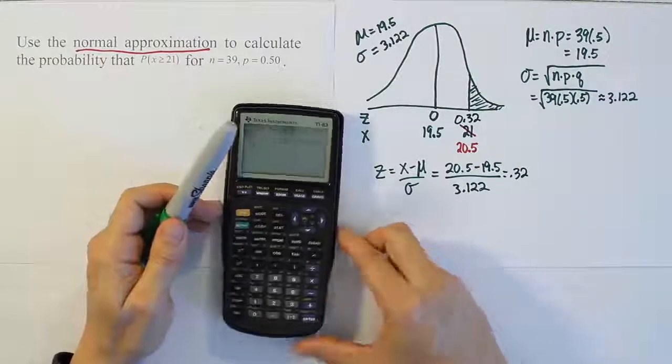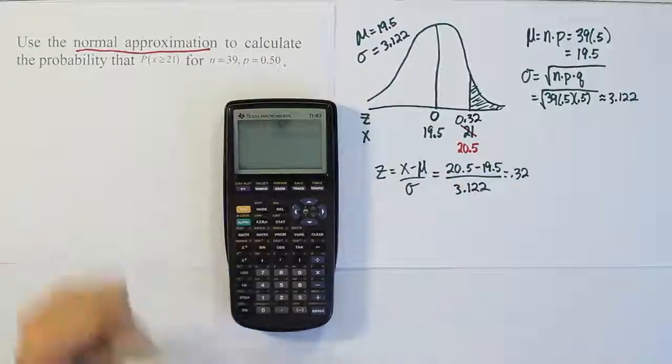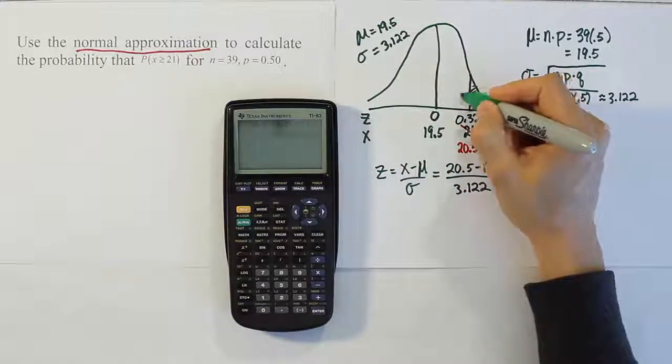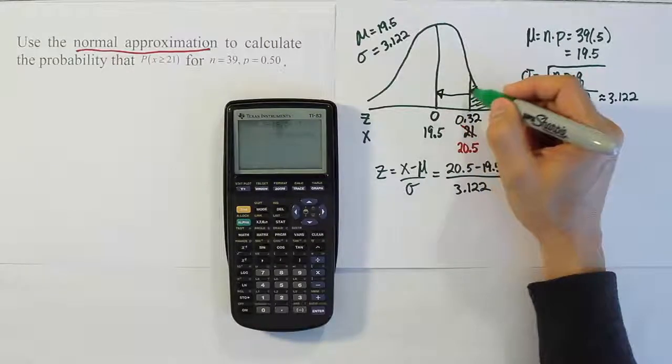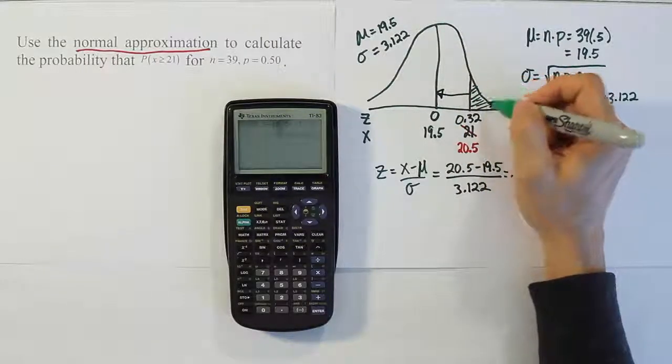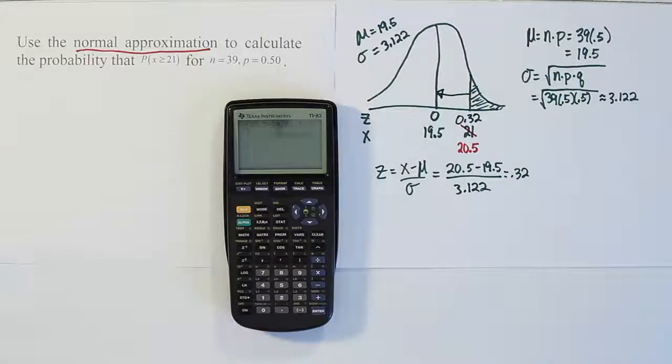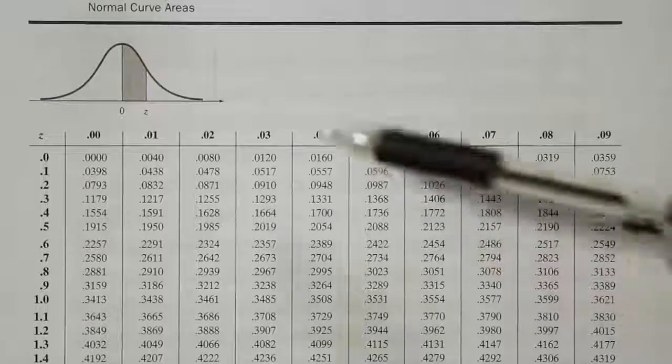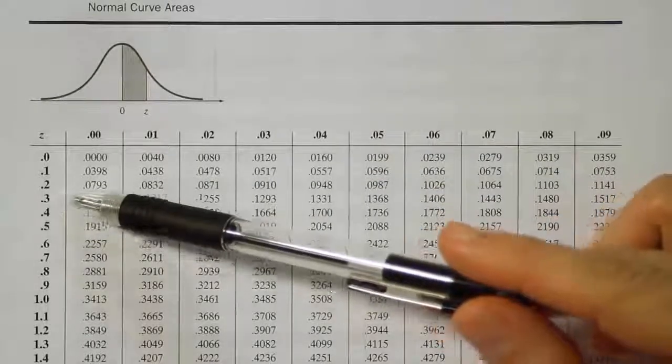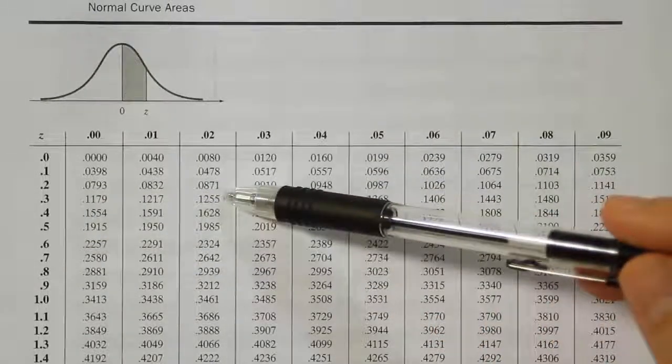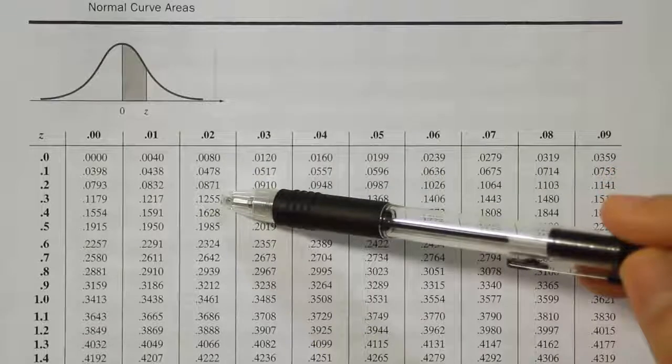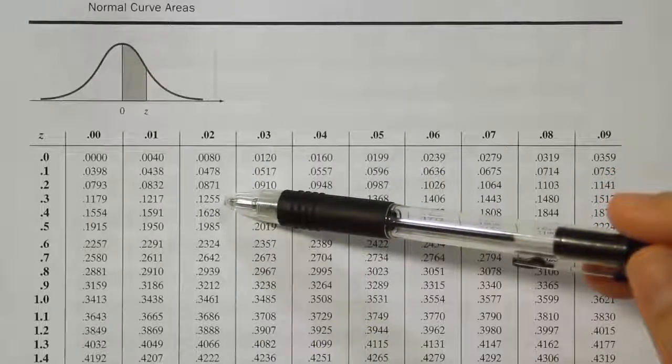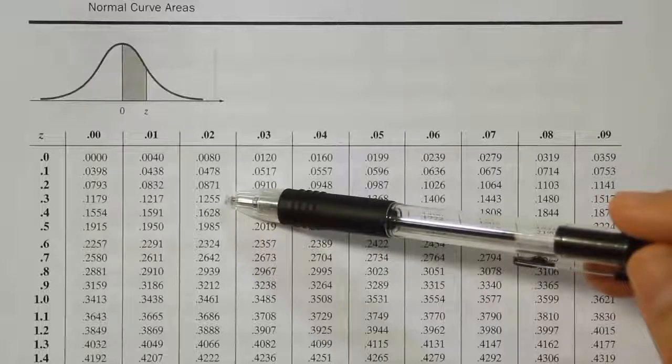Let's go to our z-table now and look at 0.32 and see what area we get for that part from here to here. Remember, that's the area we get. We have to do 0.5 minus that area to get the area in the tail. So we're on the z-table looking at 0.32. There's 0.3, and over to where the second column or the third column with 0.02 is at, we have 0.1255.